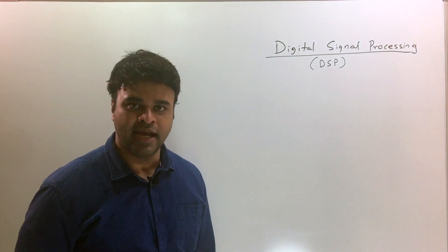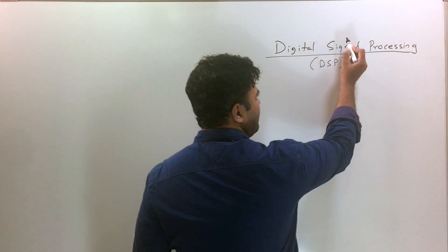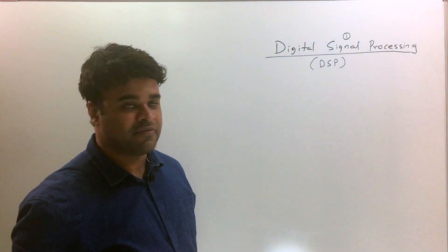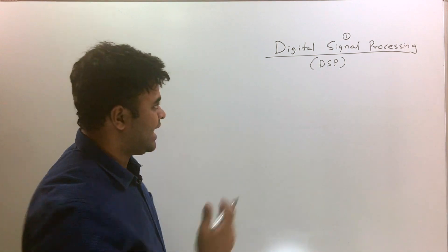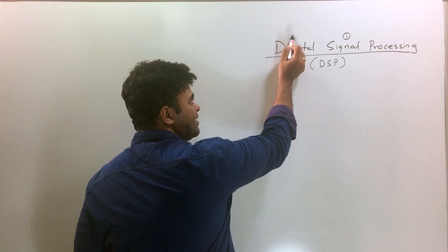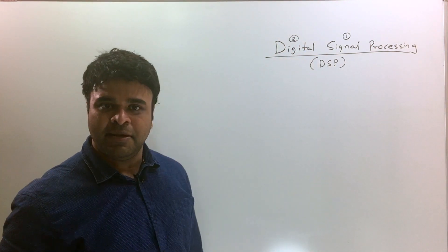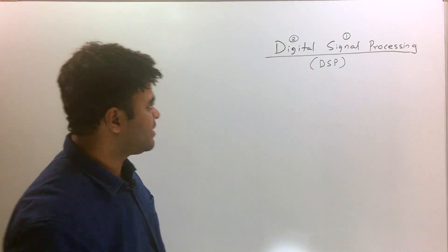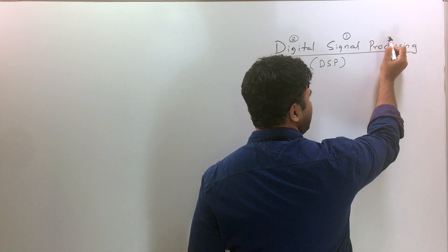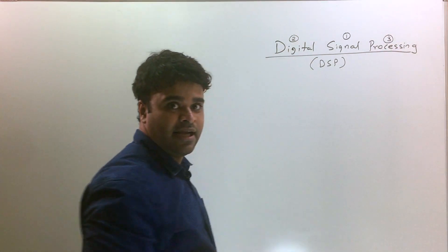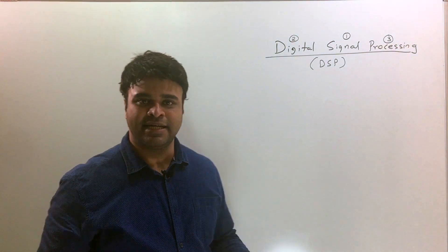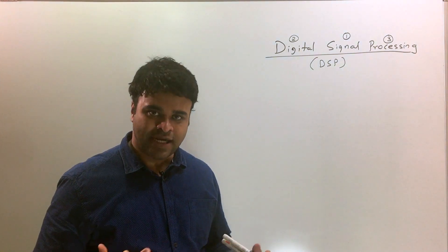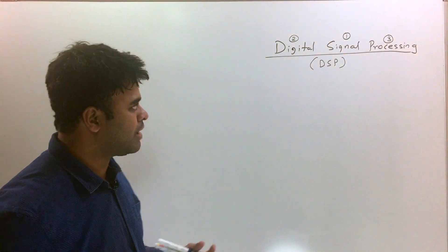What we're going to do is talk about signals first — you need to understand what exactly the word 'signal' means. After that we'll go and understand 'digital.' You may already know what digital means, but we'll look at the digital aspect of a signal. The third term is 'processing,' which is pretty much the entire subject — the processing of a digital signal. So let's get started.